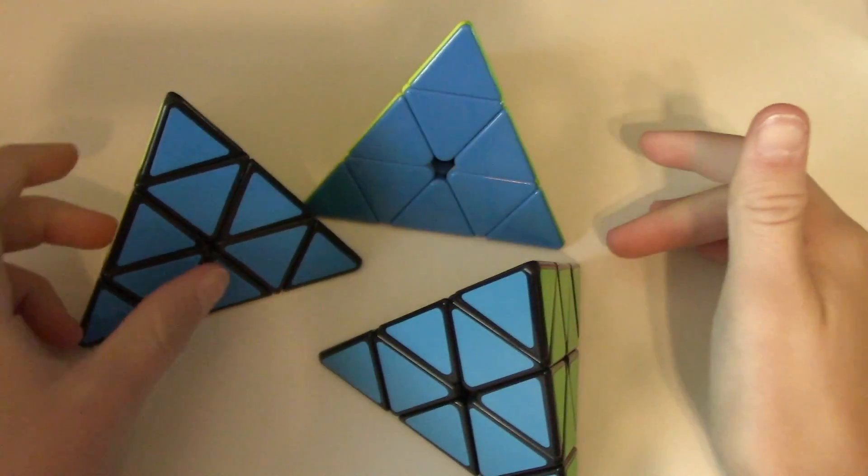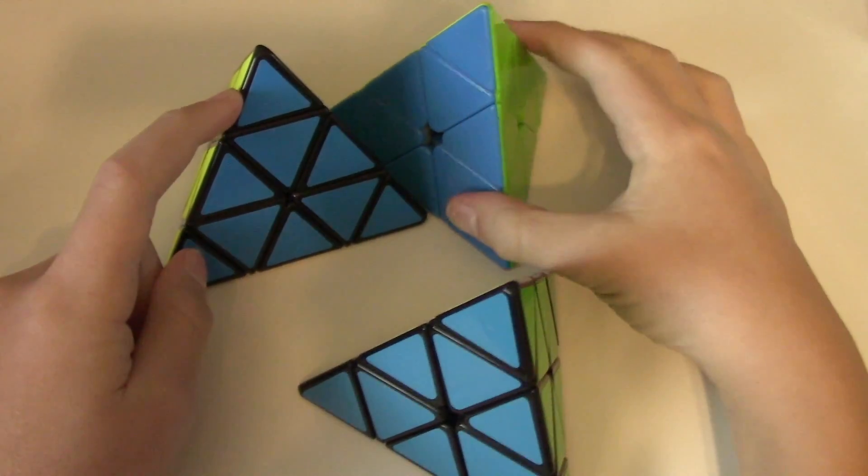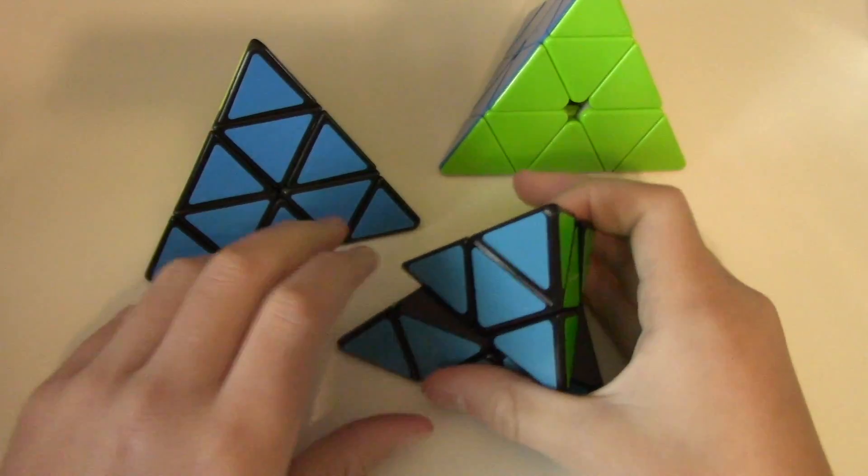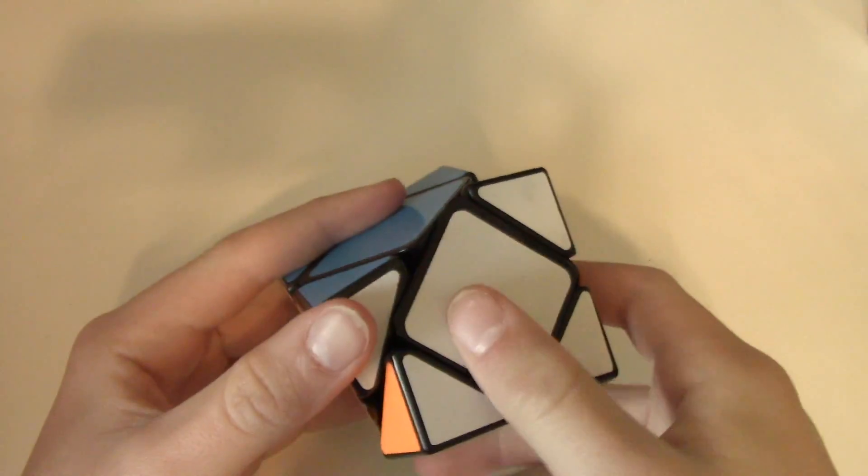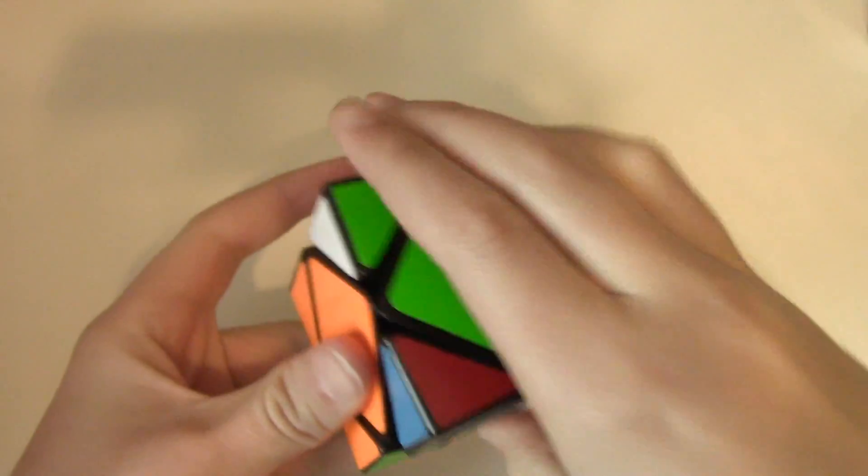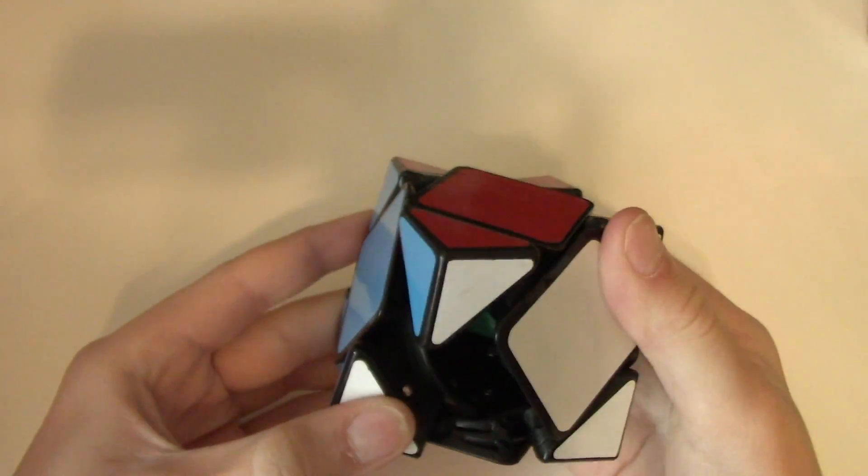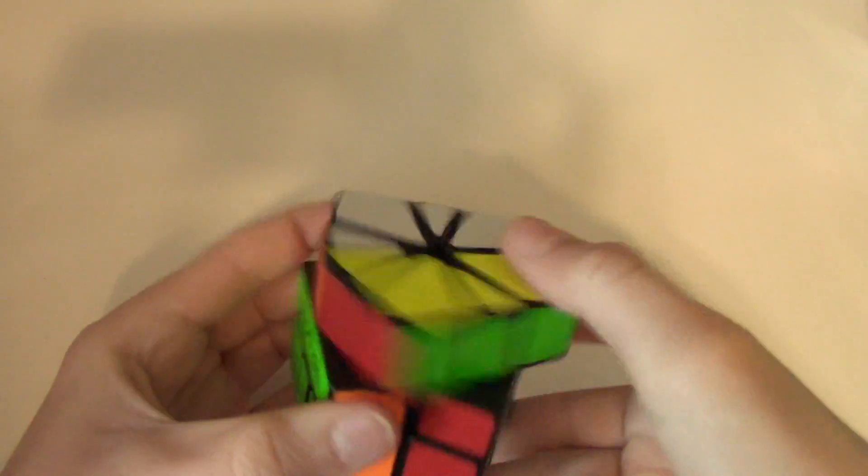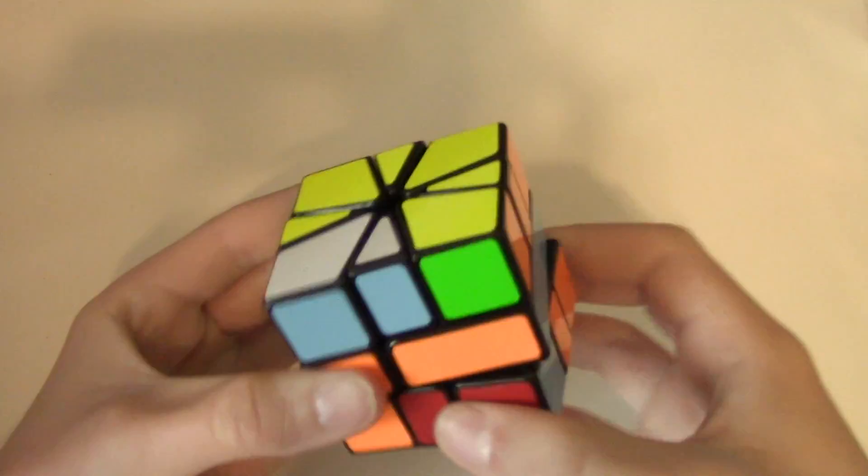These are my three Pyraminxes: a Meffert's Pyraminx, a QiYi Pyraminx the original one so it's really clicky, and my main Pyraminx the original Moyu Pyraminx. This is also my only Skewb, a Moyu Skewb the original. It's pretty good, it's really loose though. This is my only square-1, a QiYi square-1. This is like the best square-1 on the market in my opinion. This is my favorite cube in my collection, Moyu Shengshou Megaminx 3x3.